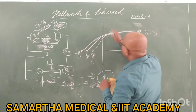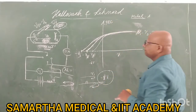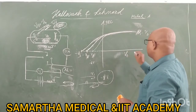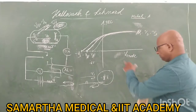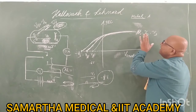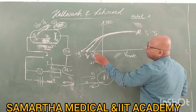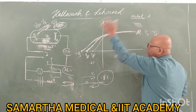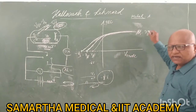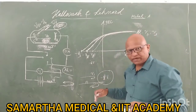This is the graph of anode potential versus photoelectric current when you are changing the frequencies. For nu 1, V1 comes; for nu 2, V2 comes; for nu 3, V3 comes. And you can change metals also — metal A, metal B, metal C — you can work it out. The same kind of graph you will get.